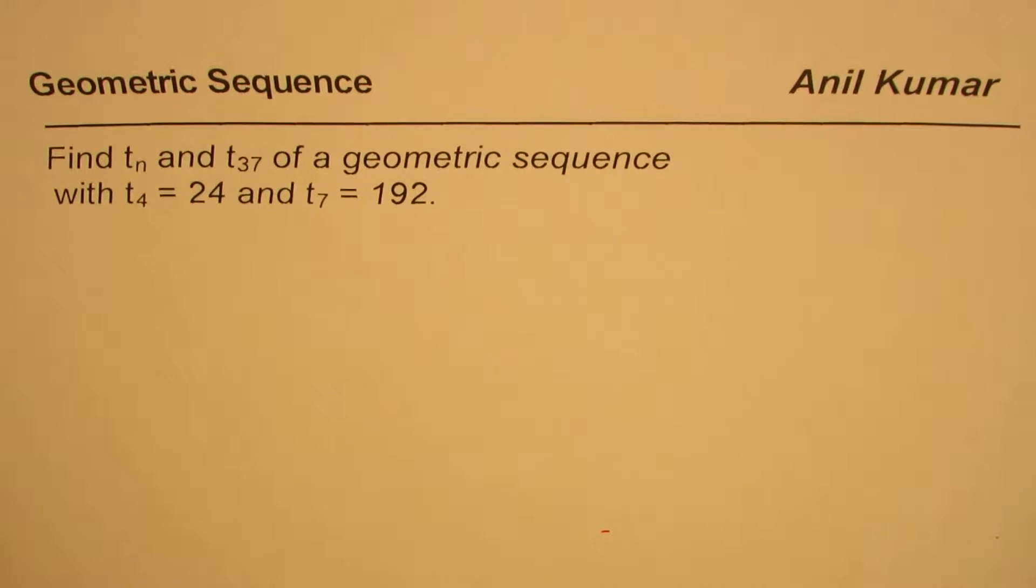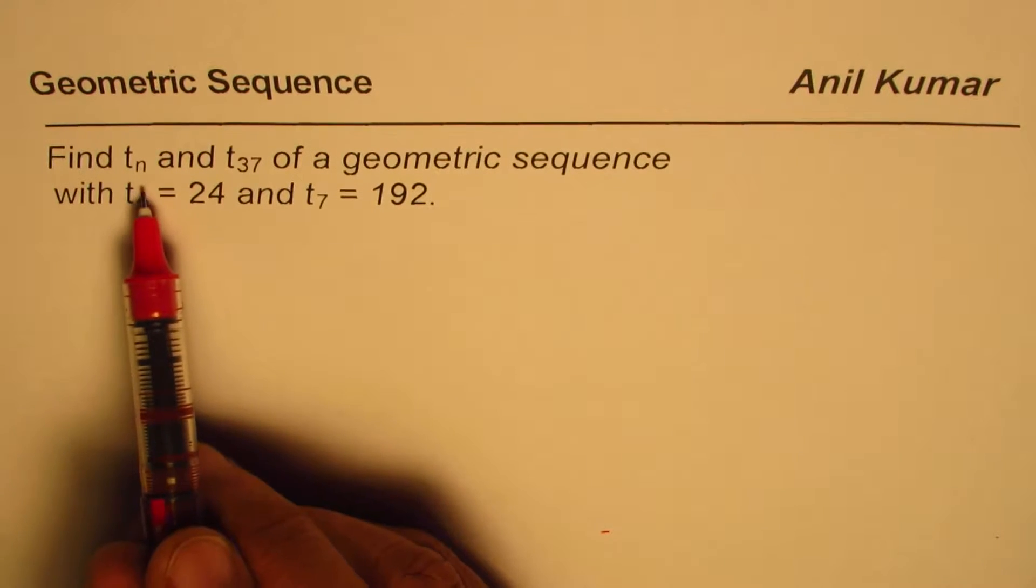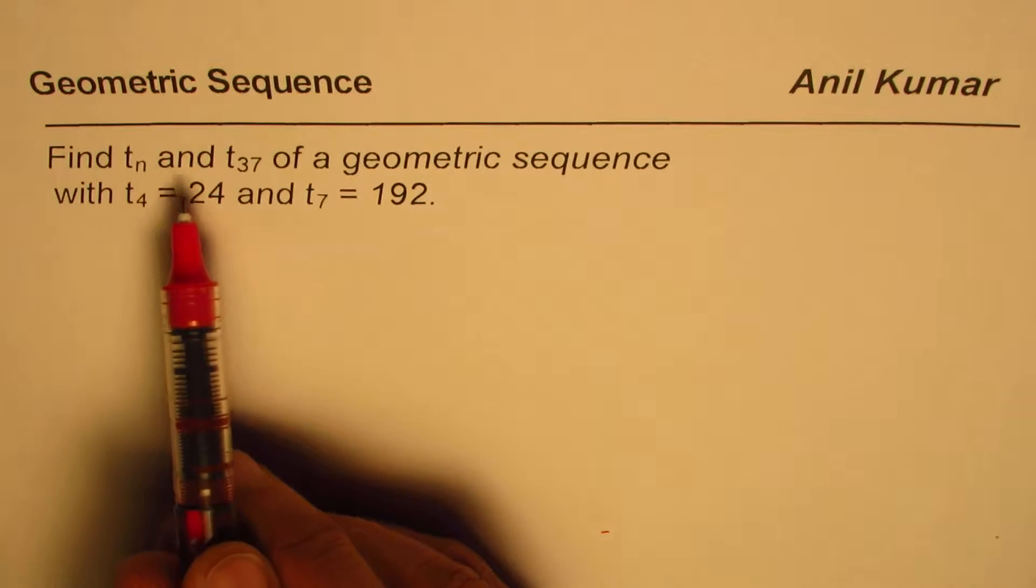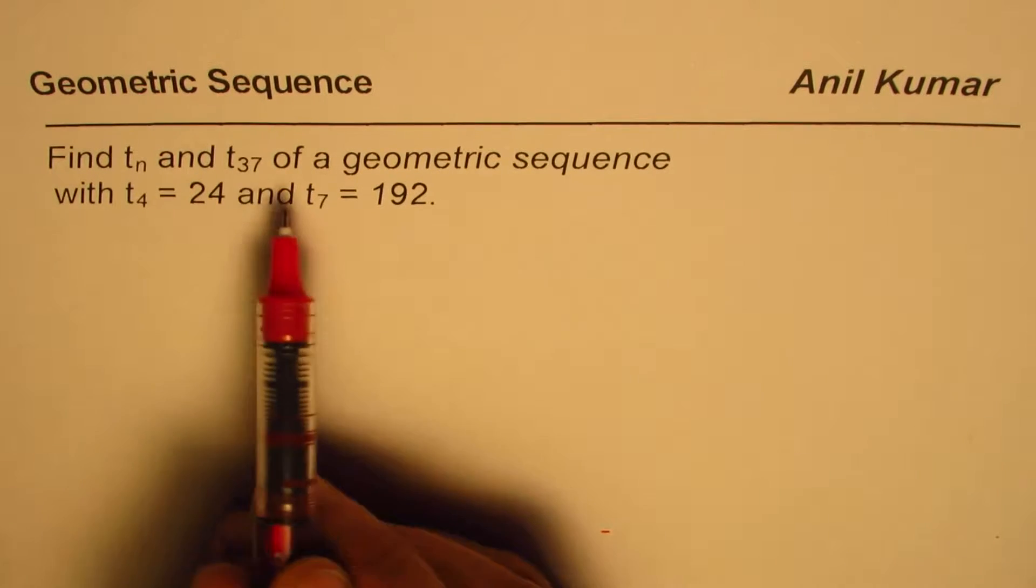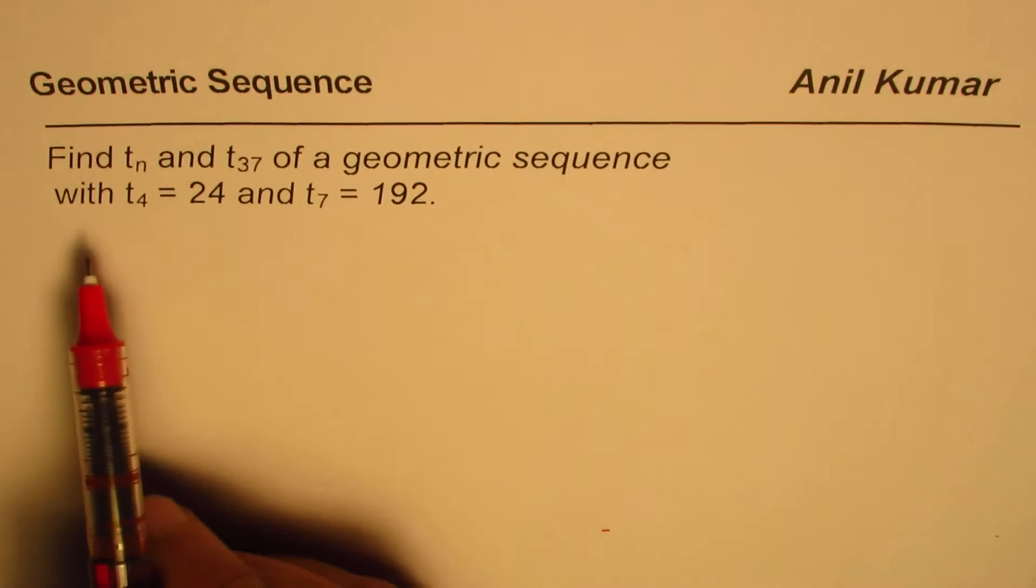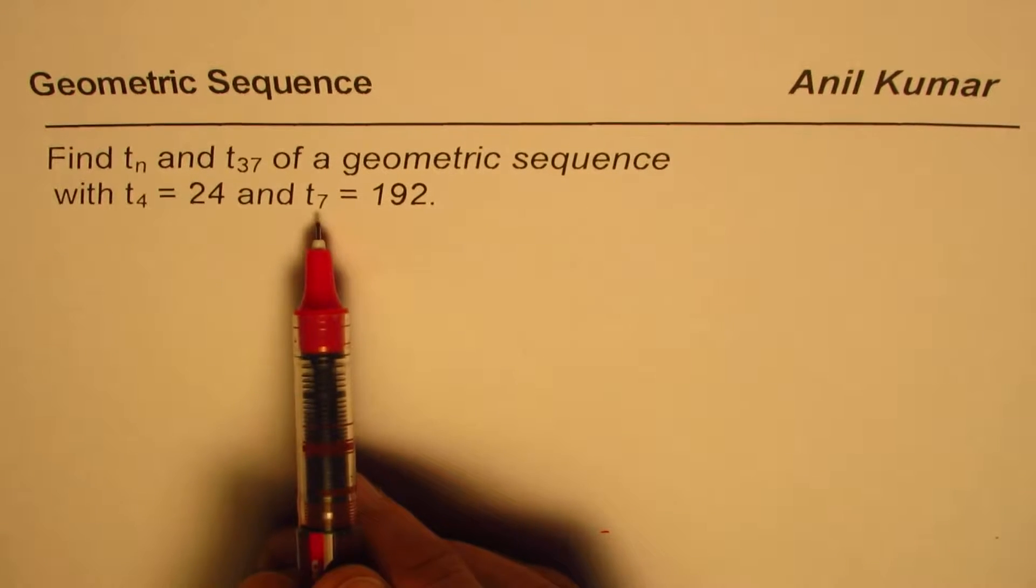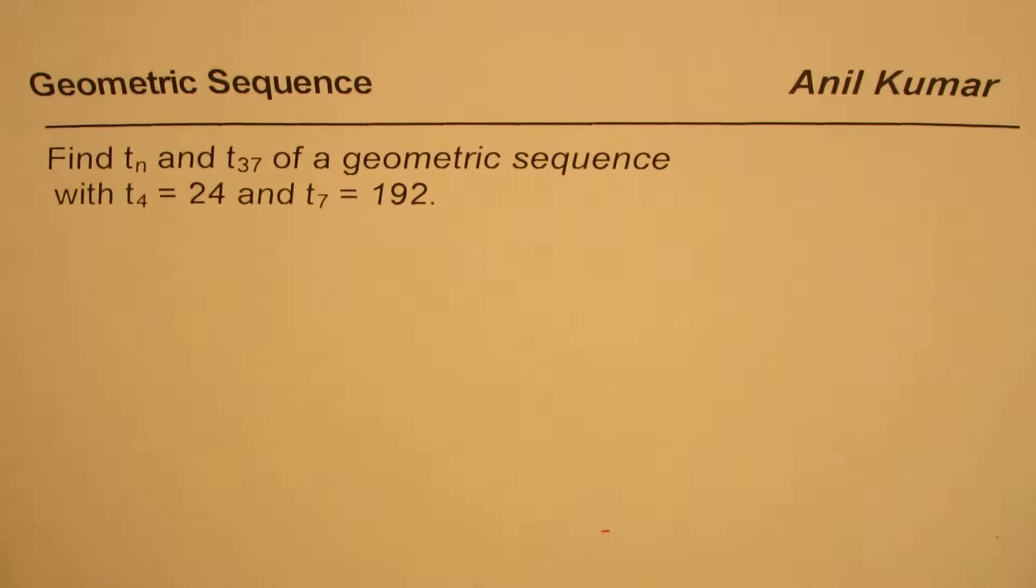The question here is: find Tn and T37, that means the nth term general formula and the 37th term of a geometric sequence with T4 equals 24 and T7 equals 192.